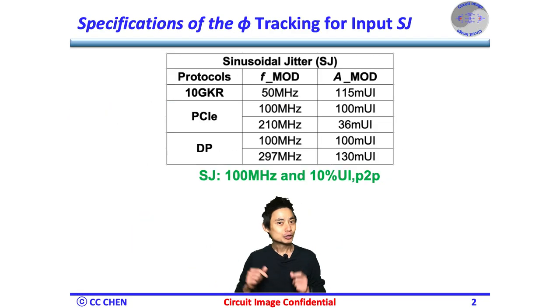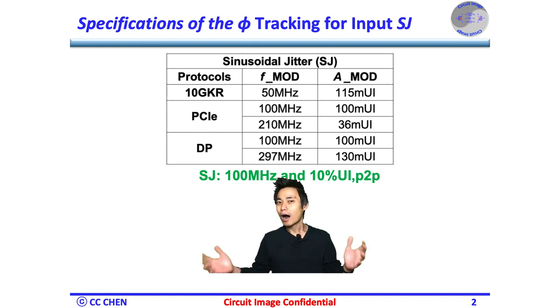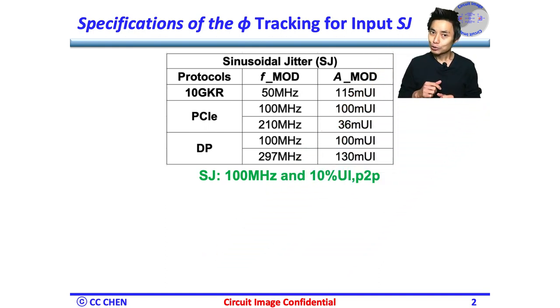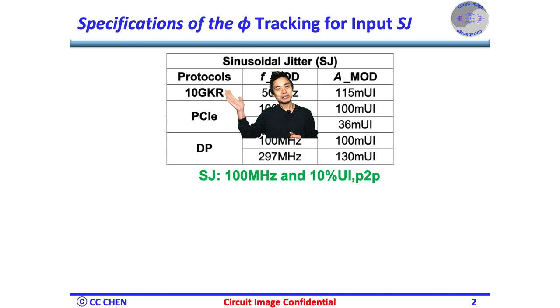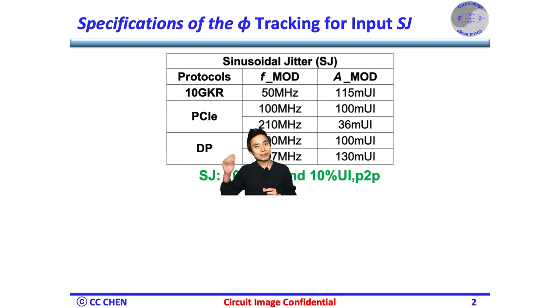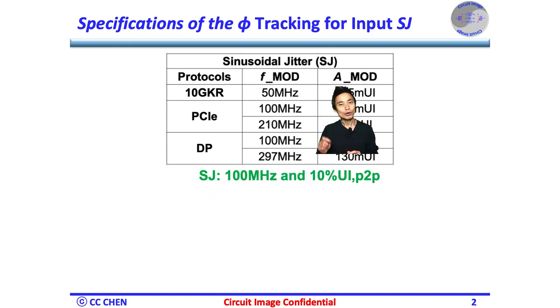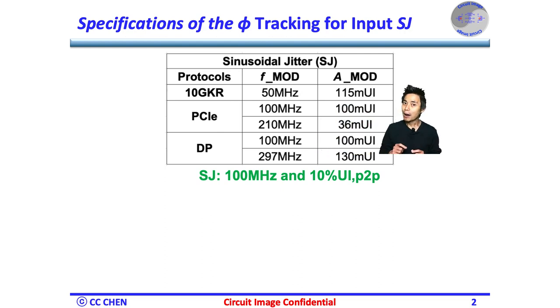In addition to a jitter tolerance specified in most protocols, a specific sinusoidal jitter would be also defined in most protocols, like 10GKR Ethernet, PCIe, and DisplayPort Interface. The SJ modulation frequency is roughly 50 MHz to 300 MHz, and the modulation amplitude peak-to-peak is roughly 3% UI to 13% UI.